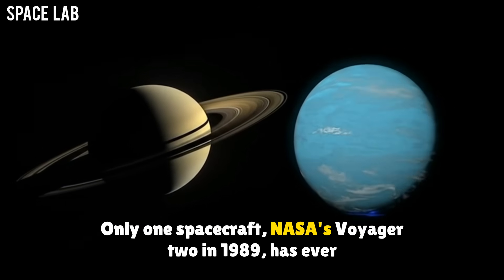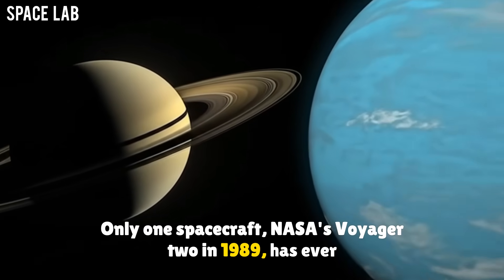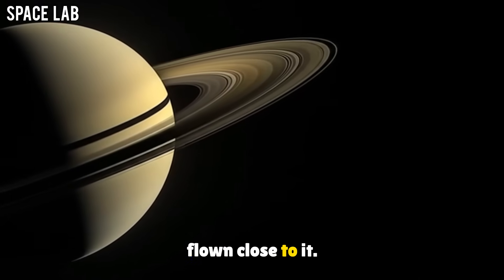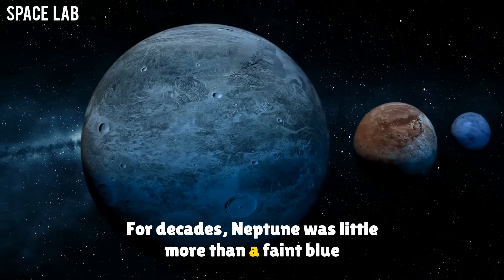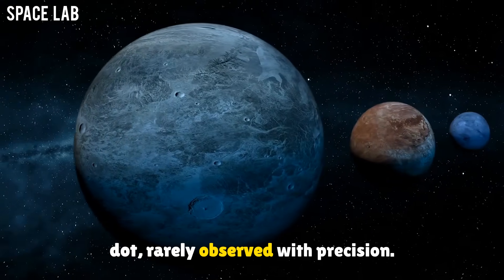Only one spacecraft, NASA's Voyager 2 in 1989, has ever flown close to it. For decades, Neptune was little more than a faint blue dot, rarely observed with precision.